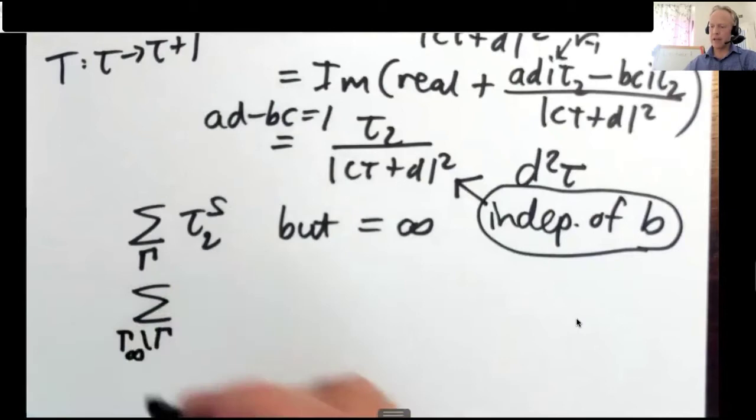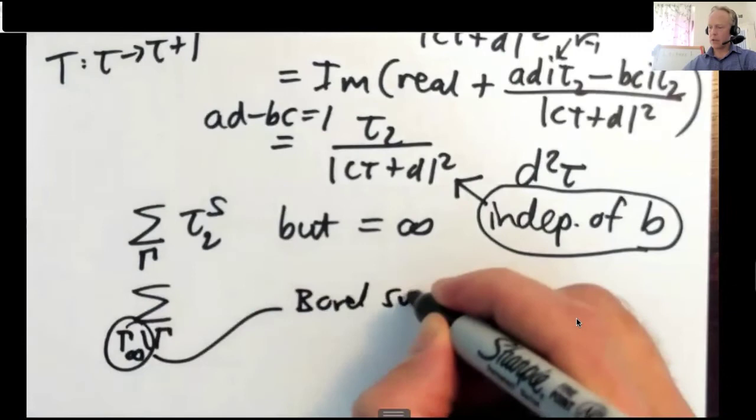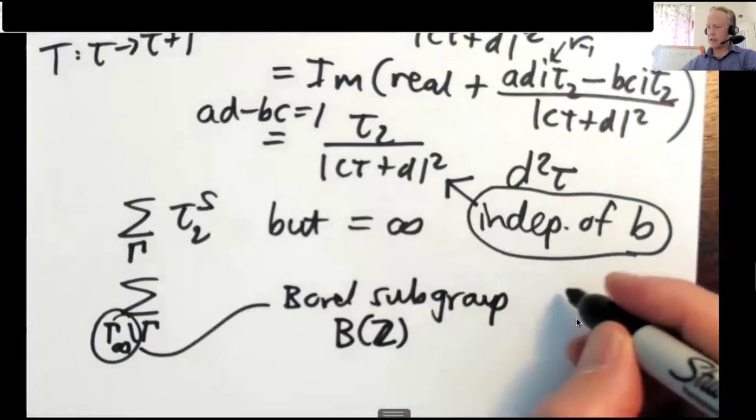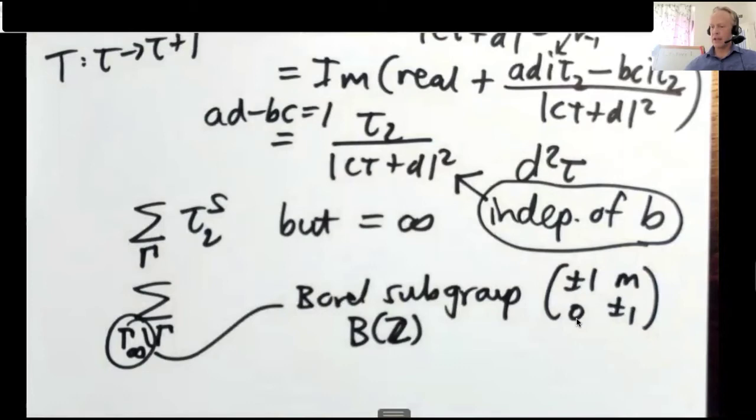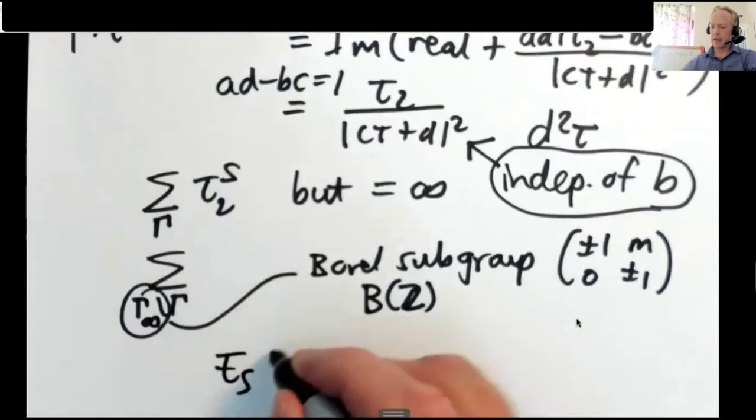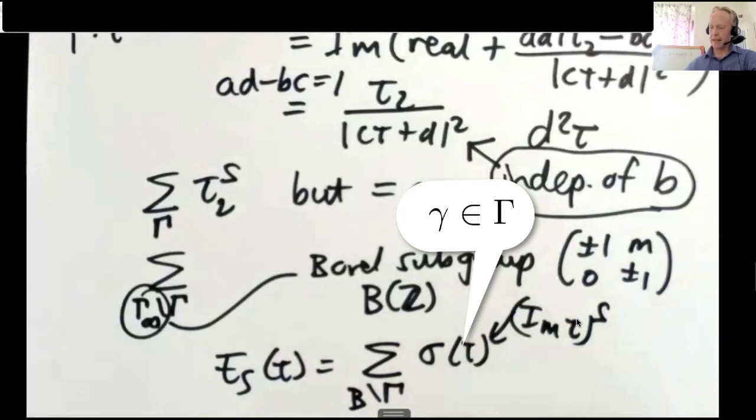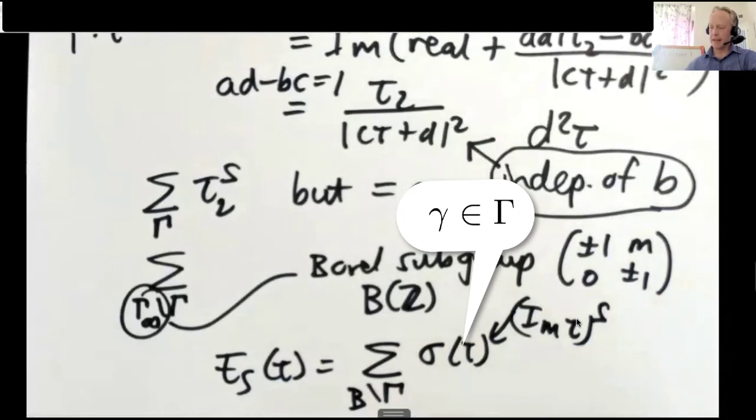But one way to fix this problem is just to divide up by something called gamma infinity, which in general is a Borel subgroup, more generally, so it's sometimes denoted like B. And here is just this subgroup, plus minus one, plus minus one, zero, and then some integer M. So if you identify matrices that are related by this action, then you get a sum that you can actually perform that is finite, and then you get Es. So Es of tau is sum over this gamma divided by this Borel of the seed function sigma tau, where sigma tau is just imaginary part of tau to the s.